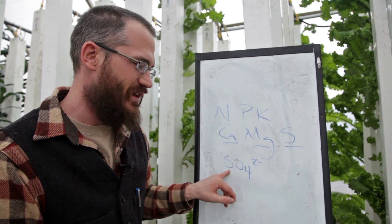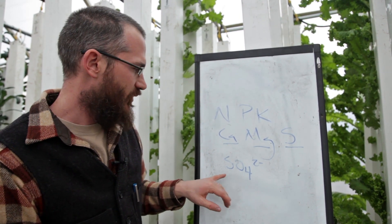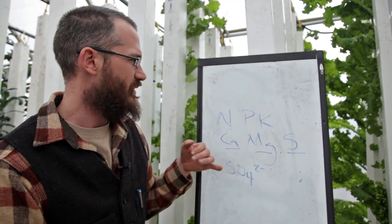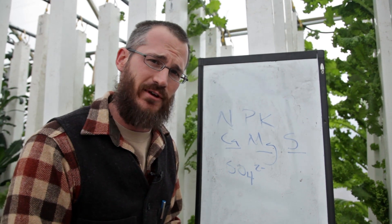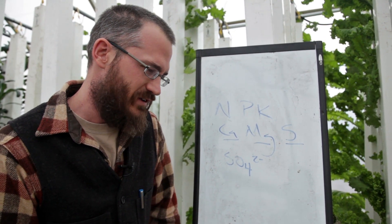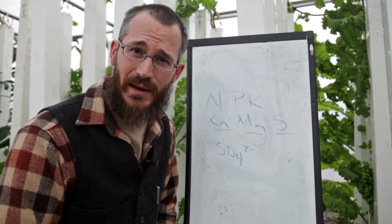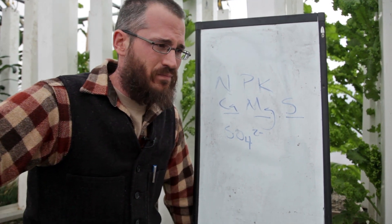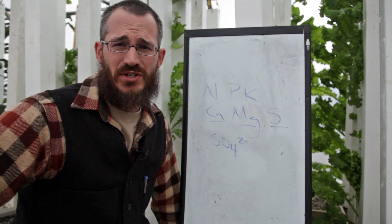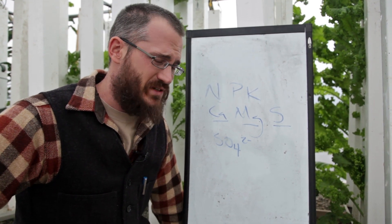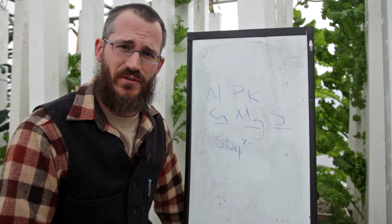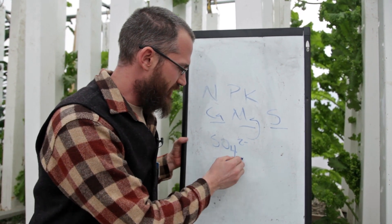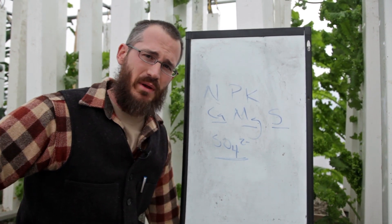You'll notice that a lot of the amendments we've talked about over the years are sulfate-based — potassium sulfate, and in the last video we talked about epsom salts, magnesium sulfate. I've heard from a lot of different people: use potassium sulfate to help supplement potassium. And they say they're really worried about having too much sulfate in their system. Today I'm going to talk about sulfur toxicity, sulfate toxicity, and debunk the idea that sulfate is a problem in most aquaponic systems.